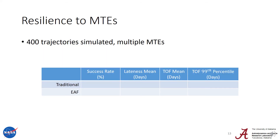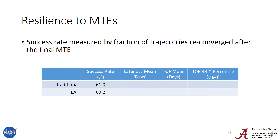Now that we've looked at the nominal trajectory, we want to explore how resilient the new expected angle fraction design is to missed thrust events. We did this by simulating 400 different trajectories with multiple missed thrust events in each trajectory, as defined by the two Weibull distributions found by Imkin et al. If the spacecraft was able to reconverge the trajectory to the target L1 halo after the final missed thrust event, we consider that a successful trajectory. Expected angle fraction performed almost 30 percentage points better on success rate than our traditionally designed trajectories.